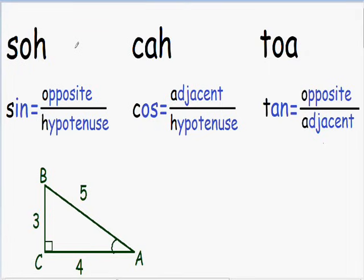If you look at the equation for the sine, you see that the sine is equal to the opposite over the hypotenuse. You can use the word SOH to help you remember this equation, because the S stands for sine, the O stands for opposite, and the H stands for hypotenuse.